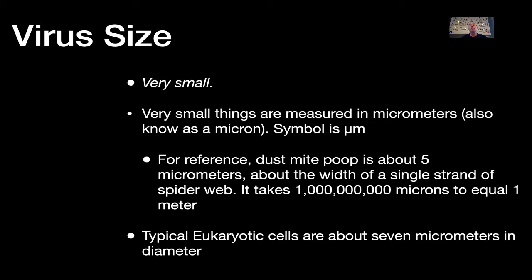Let's talk virus size. Viruses are very, very small. Things that are really small are measured in micrometers, otherwise known as a micron. For reference, dust mite poop is about five micrometers, which is about the width of a single strand of spiderweb. It takes one million microns to equal one meter if you stack them end over end. A typical eukaryotic cell is about seven micrometers in diameter.